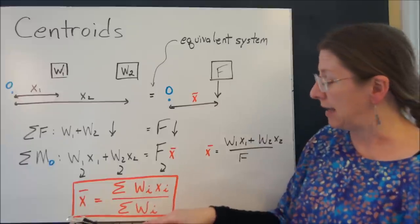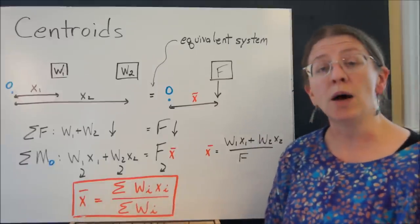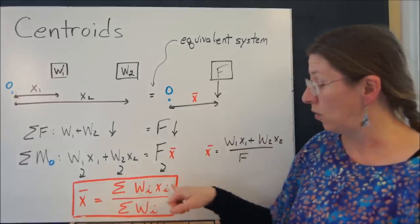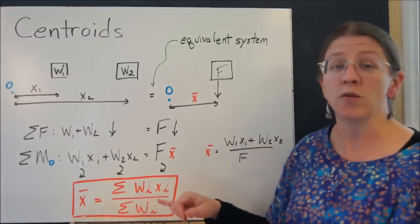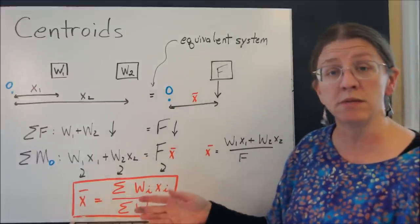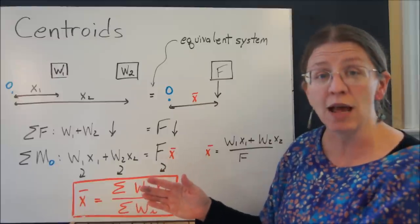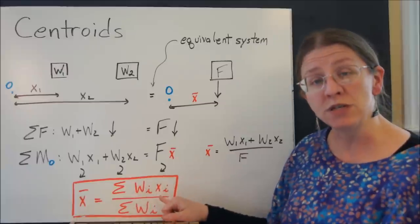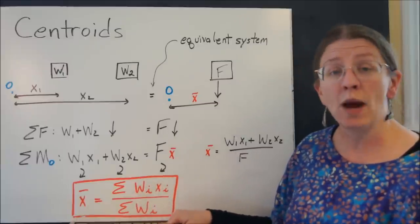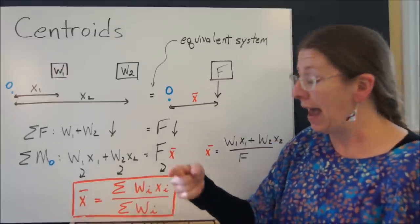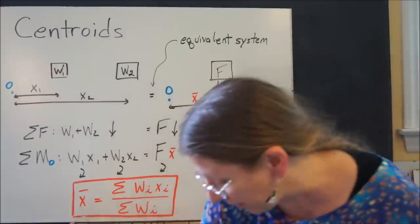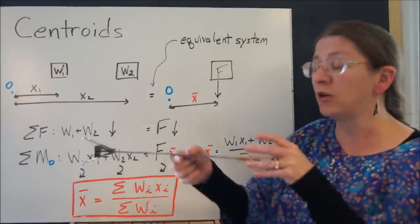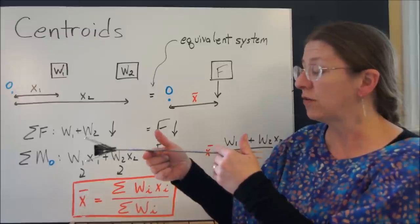So I can write that as x bar is the sum of w1x1 plus w2x2, or for as many as I want. This is completely generalizable. Do as many weights as you'd like. The sum of the weights times their distances divided by the sum of the weights has to be my x. And it's all the same thing as balancing your moments. Where does your finger need to go?